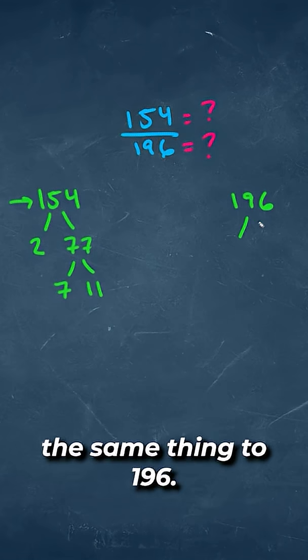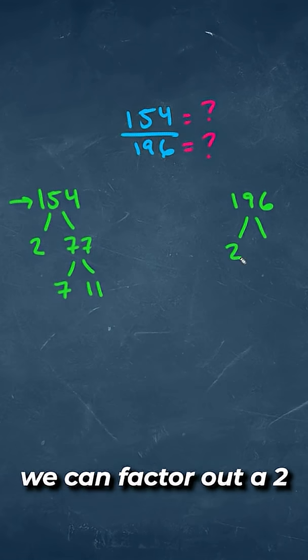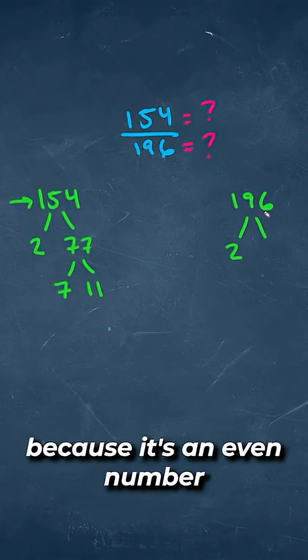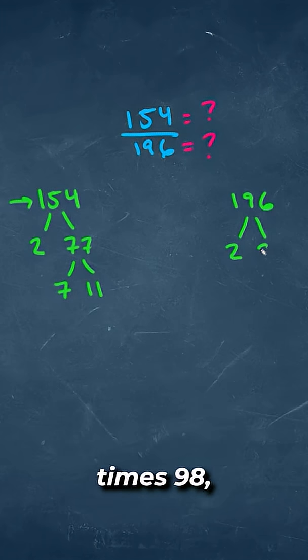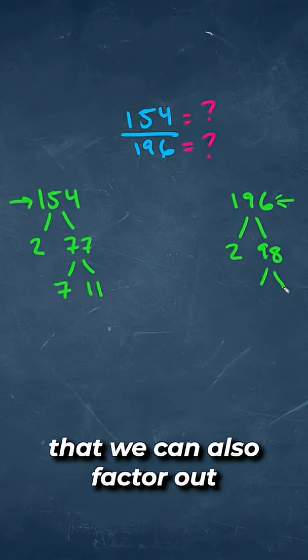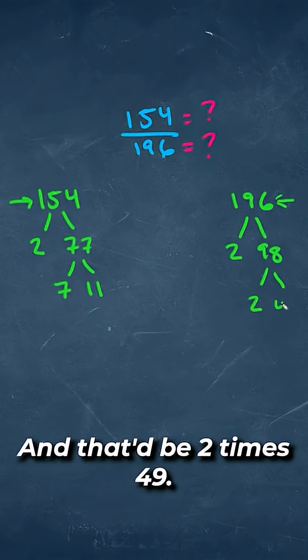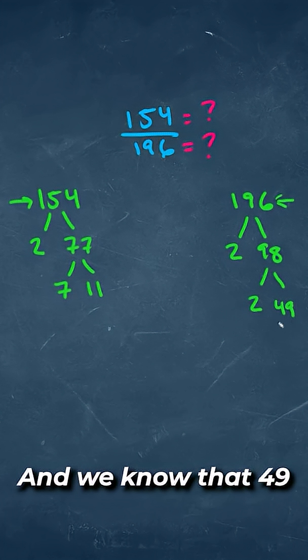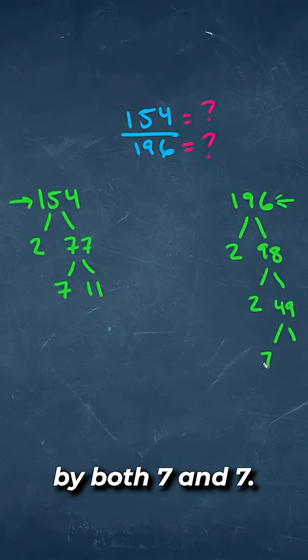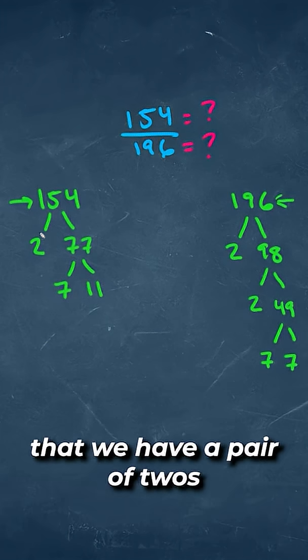We could do the same thing to 196. We know we can factor out a 2 because it's an even number. That would leave us with 2 times 98, which again would equal that 196. Then we can also factor out another 2 with this 98, and that'd be 2 times 49. And we know that 49 is divisible by both 7 and 7.